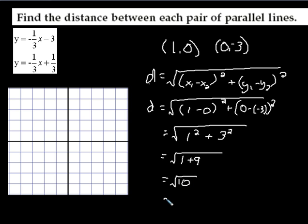And if I want a decimal approximation, square root of 10, the calculator is about 3.2. There you go. 3.2 is the distance between these two lines right here.